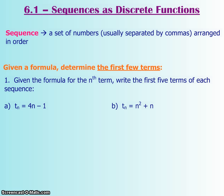Your sequence, a sequence of numbers is kind of like a list. So, for instance, 2, 4, 6, 8 and so on, that's a sequence. Each number is separated by a comma and it's arranged in a certain order.